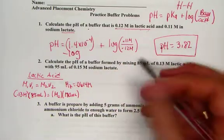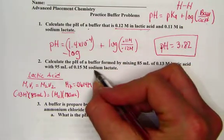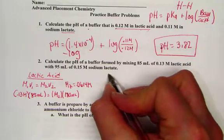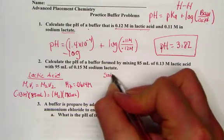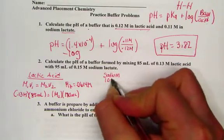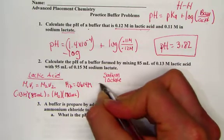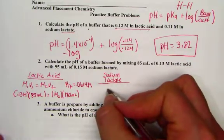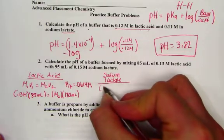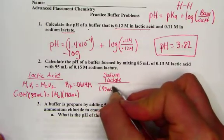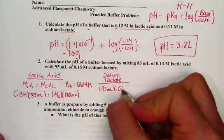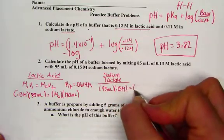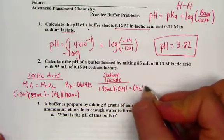We'll need to do the same strategy for the conjugate base coming from sodium lactate. And again, sodium lactate giving us the source of the conjugate base, the lactate ion. Its original volume of 95 mL times the original molarity of 0.15, set equal to M₂V₂.